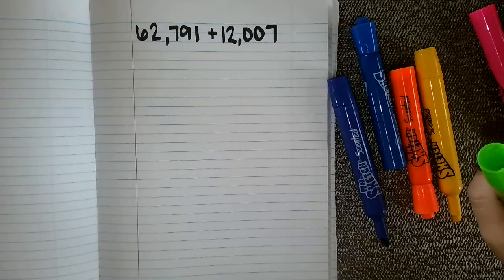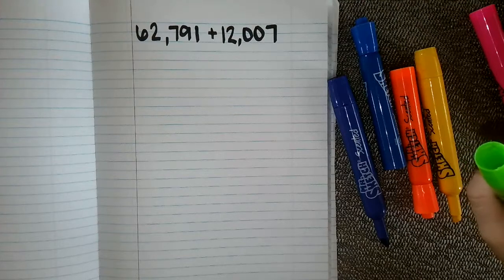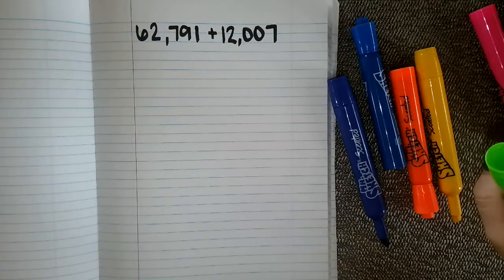All right, so the numbers we're going to be working with in this practice are 62,791 and then we are going to add 12,007.